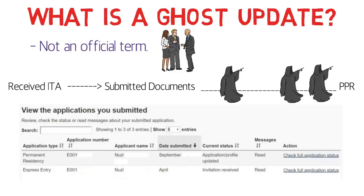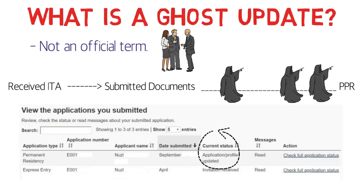A ghost update is actually an update in your CIC account which you'll notice, but you won't find any real updates in your application details. If you log into your account you'll find something like 'application or profile updated,' but when you click 'check full application status' all the same details are there. You log out, log back in, and the current status still shows 'submitted' — yet the notification says 'application profile updated' again. This is the ghost update.